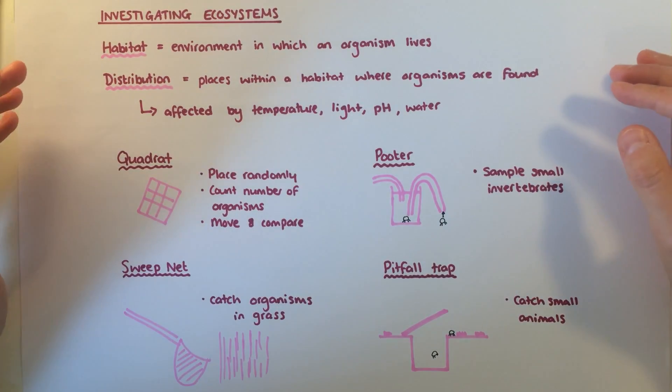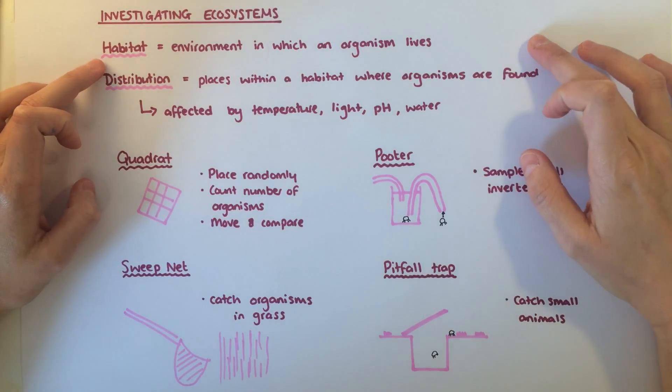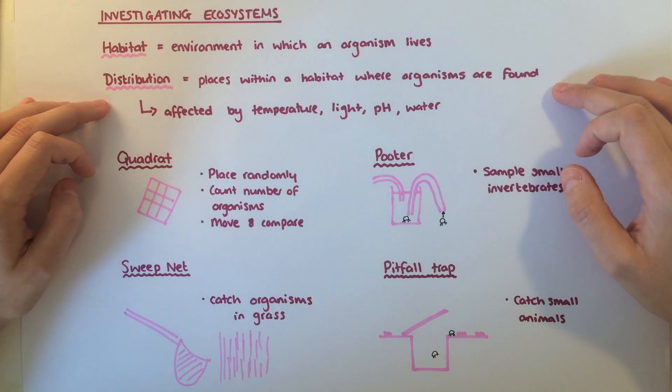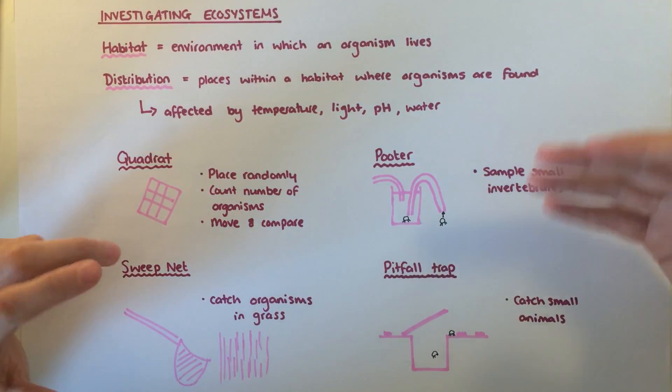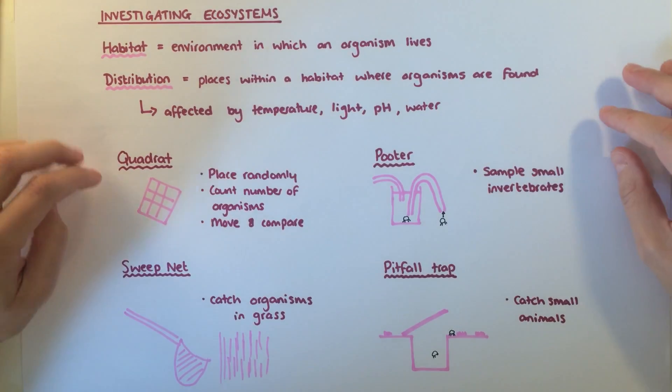Investigating ecosystems, hopefully this is something you've all had a go at for yourselves. There are various techniques that can be used to sample organisms within a habitat and investigate their distribution. The distribution of organisms can be affected by factors such as temperature, light intensity, pH of soil, and amount of water available.